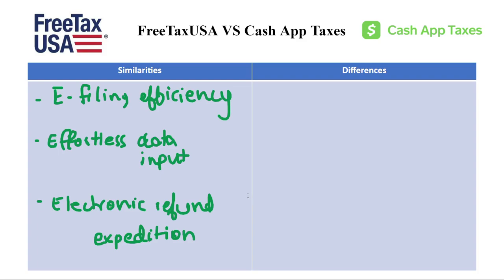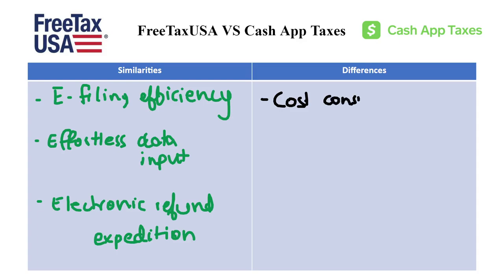Now let's look at the differences. The first difference is cost considerations. FreeTaxUSA lives up to its name with completely free federal tax filing, but they charge a flat fee of $15 per state return, making them a budget-friendly option for straightforward tax situations.